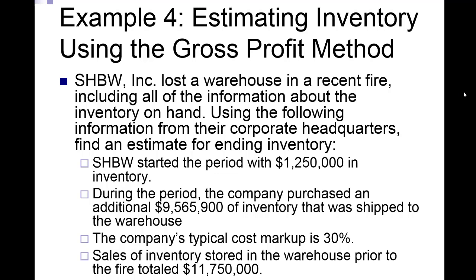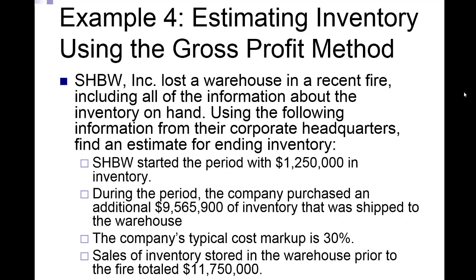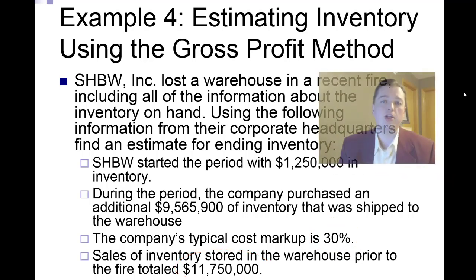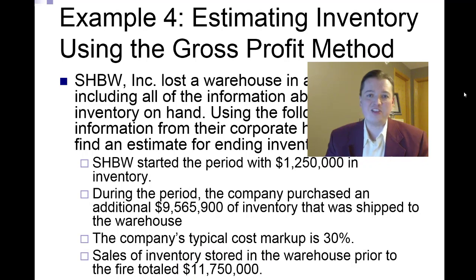SHPW Incorporated lost a bunch of inventory in a recent fire and needs to figure out how much was lost to get an insurance payout. Their records are gone and the inventory is gone, so they contact corporate headquarters. They started with $1.25 million in inventory in the warehouse. During the period they purchased $9,565,900 — that's net purchases. Typical cost markup is 30%. Sales of inventory stored in the warehouse prior to the fire were $11,750,000. With those four pieces of information we can apply the gross profit method.